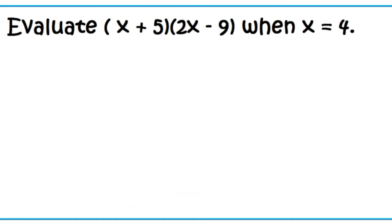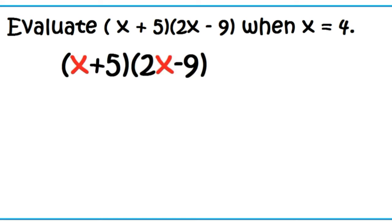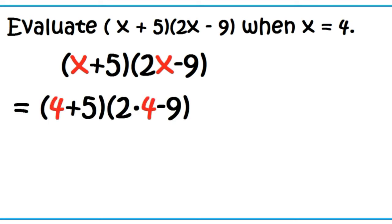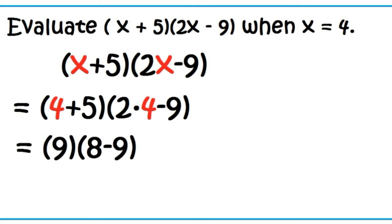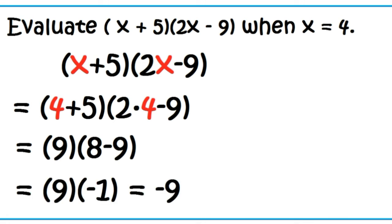Evaluate the quantity X plus 5 times the quantity 2X minus 9 when X equals 4. Substitute 4 for X. The quantity 4 plus 5 times the quantity 2 times 4 minus 9. 9 times the quantity 8 minus 9 is just equal to 9 times negative 1, which equals negative 9.